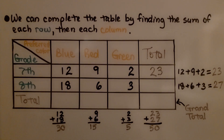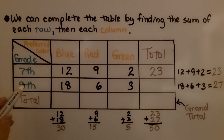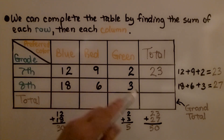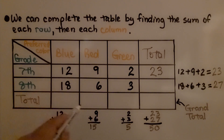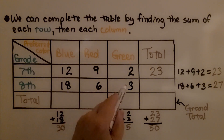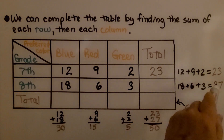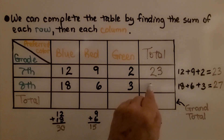We do the next row. We've got eighth graders that chose blue, red, or green. We've got 18 plus 6 plus 3, which is 27.